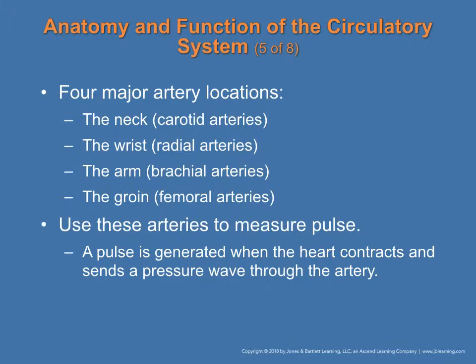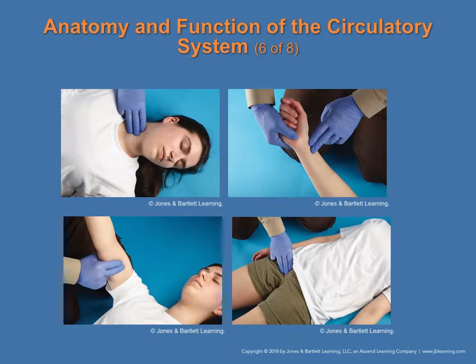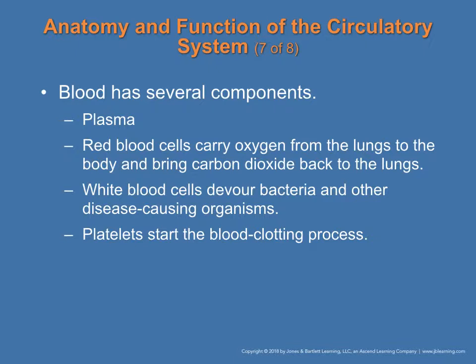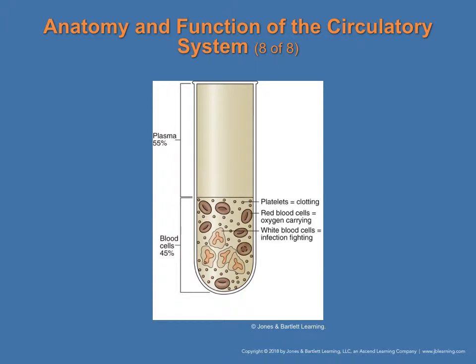There are four major areas to check for pulse: the neck, called carotid; the wrist, called radial; the arm, called brachial; and the upper thigh area, called femoral. Blood is made of different components: plasma; red blood cells, which carry oxygen from the lungs; white blood cells, which are the immune system component that kills bacteria and foreign disease-causing organisms; and platelets, which allow the clotting process — if you cut yourself, platelets come to the area and stop the bleeding.